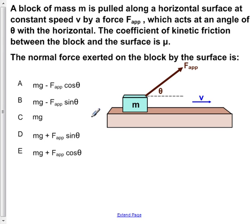A block of mass m is pulled along a horizontal surface at constant speed by a force f applied, which acts at an angle of theta with respect to the horizontal. The coefficient of kinetic friction between the block and the surface is mu. The normal force exerted on the block by the surface is...